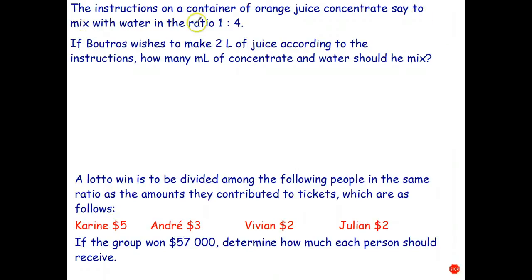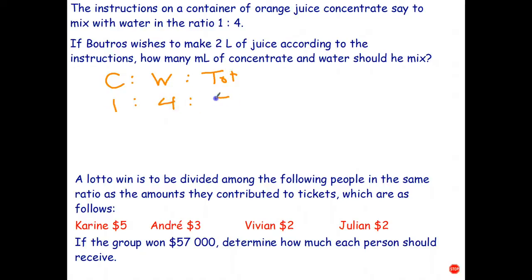Welcome back students. The instructions on the container of orange juice concentrate say to mix with water in the ratio one to four — one part concentrate to four parts water — and she wishes to make two liters of juice. So we have concentrate to water to total. The concentrate to water is one to four; overall there are five parts. Now the answer is supposed to be in milliliters, so the secret here is that two liters is really 2000 milliliters.